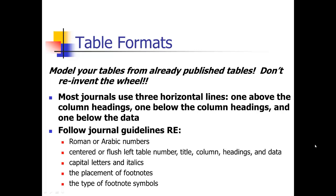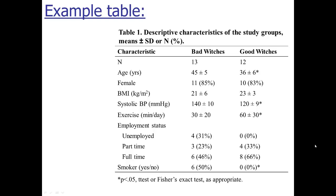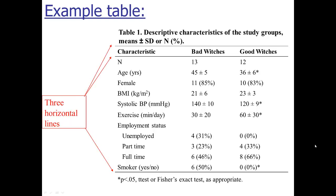Another thing to point out about table formats: most journals use the standard of three horizontal lines — one above the column headings, one below the column headings, and one below the data. A lot of people creating their first table aren't aware of this. So here's an example table I made up — my daughter is really into the Wizard of Oz right now, so I imagined data on bad witches and good witches. I've got 13 bad witches and 12 good witches with some descriptive characteristics — that's what a typical table looks like. Notice the three horizontal lines. Also, some journals will highlight alternating rows with gray shading, which helps the reader distinguish between rows and also looks very professional.